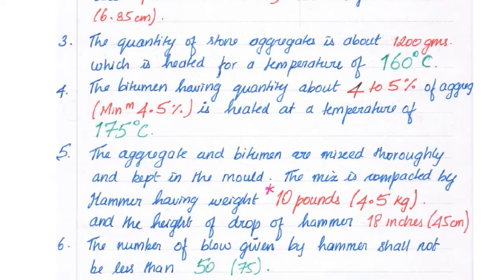The bitumen having quantity about 4 to 5% of aggregate, that is minimum 4.5%, is heated at temperature of 175 degrees Celsius.